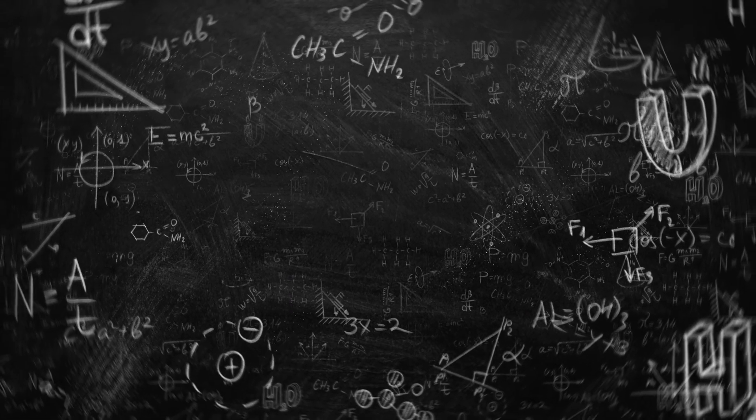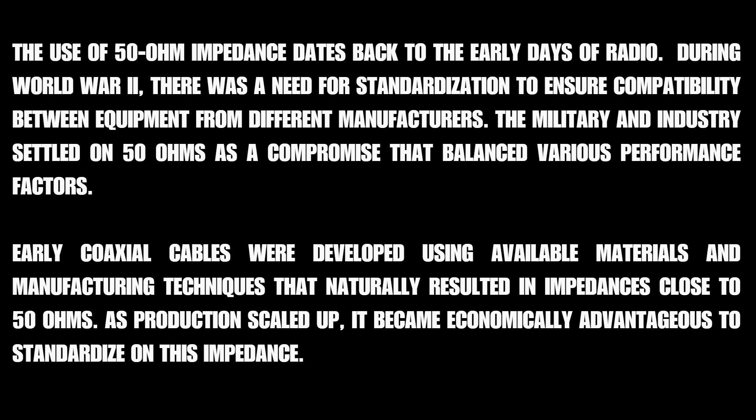So here we are. The use of 50 ohm impedance dates back to the early days of radio. During World War II, there was a need for standardization to ensure compatibility between equipment from different manufacturers. When you enter into the war machine, you have a bunch of different companies changing the way they produce things. They were making radios for the military war effort, and they needed to make sure that they all had interoperability — meaning that they worked the same. The military and industry settled on 50 ohms as a compromise that balanced various performance factors.